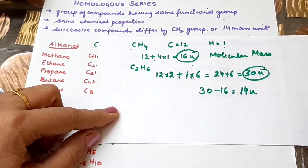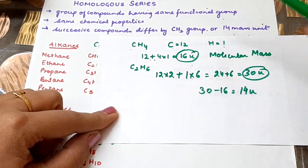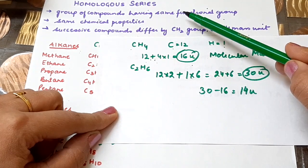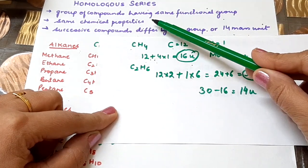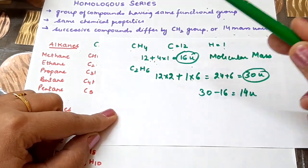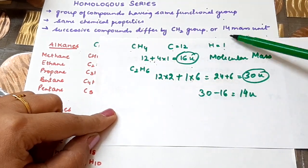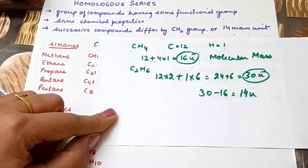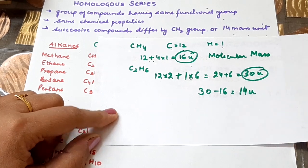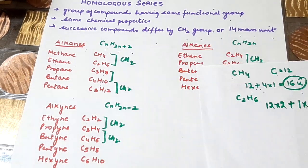So let's revise quickly. Homologous series is a group of compounds having the same functional group and the same chemical properties, and their successive compounds differ by a CH2 group or 14 mass units. I hope this is clear. If you have any doubts, you can write in the comment section. Thank you.